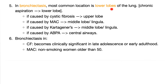Regarding lobe distribution: bronchiectasis is mostly in the lower lobes. If caused by cystic fibrosis — upper lobe. If caused by MAC — middle lobe or lingula. If caused by Kartagener syndrome — middle lobe or lingula. If caused by allergic bronchopulmonary aspergillosis — central airways, not distal, because it's associated with asthma. Bronchiectasis in cystic fibrosis becomes clinically significant in late adolescence or adulthood.